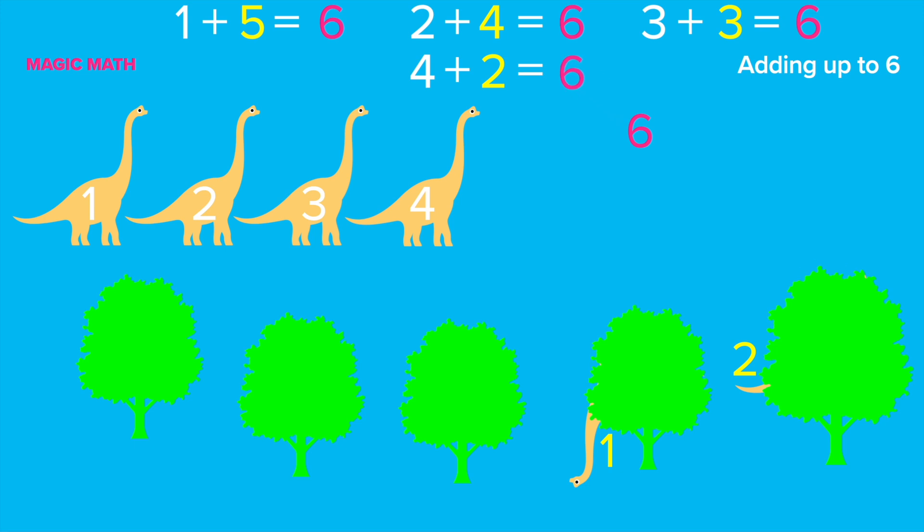Do you see the dinosaur that's upside down? Correct! What a silly way to hide! How many dinosaurs have we found? 5! Right! And how many dinosaurs are still hidden behind the trees? Right! 1! Good job! So, 5 plus 1 equals 6.